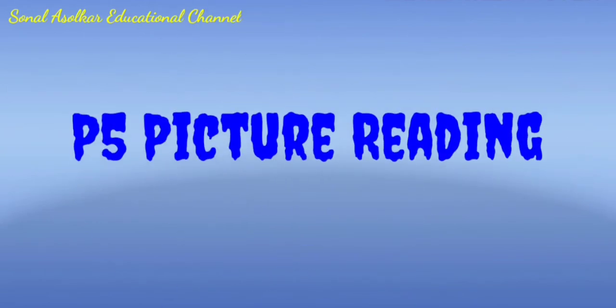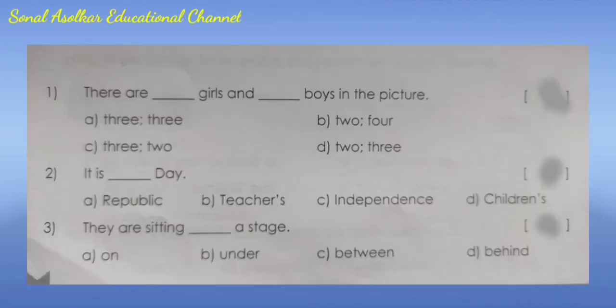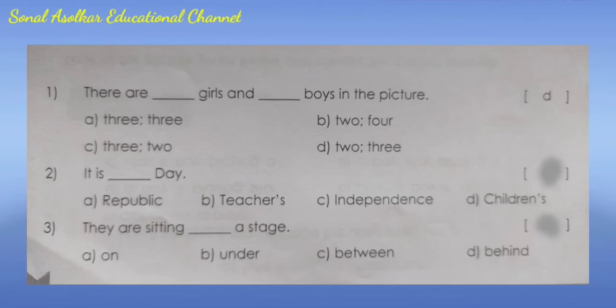Now let's complete the picture reading. Look at the picture given below and choose the correct answers. Question 1: There are blank girls and blank boys in the picture. Options: A) 3,3  B) 2,4  C) 3,2  D) 2,3. The correct answer is option D - 2 girls and 3 boys. Question 2: It is blank day. Options: A) Republic  B) Teachers  C) Independence  D) Children's. The correct answer is option C - Independence.